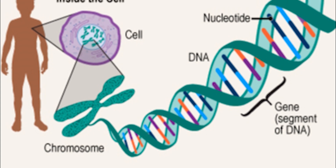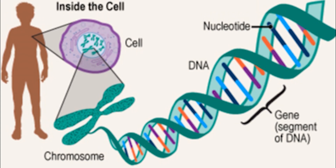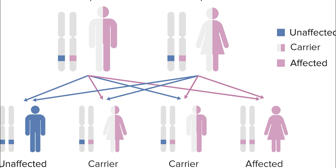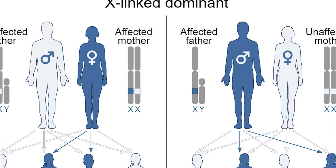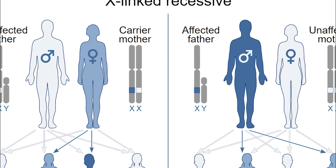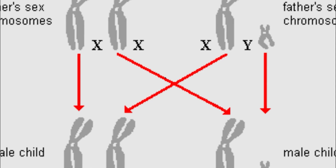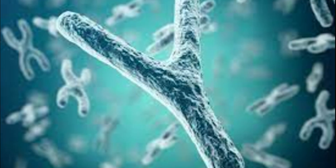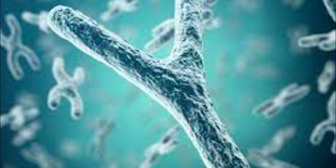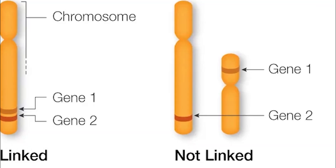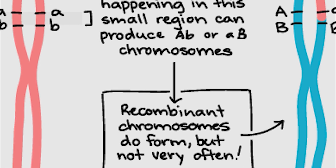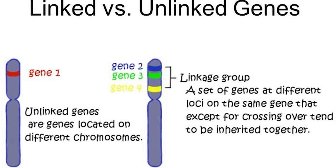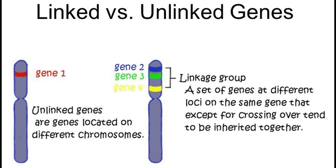This means that an individual must inherit two copies of the mutant gene, one from each parent, in order to express the trait. In addition to autosomal dominant and recessive inheritance, there are several other modes of inheritance, including X-linked dominant, X-linked recessive, and Y-linked inheritance. X-linked dominant and X-linked recessive inheritance refer to genes located on the X-chromosome, and Y-linked inheritance refers to genes located on the Y-chromosome. Another important concept is genetic linkage, which refers to the close proximity of two or more genes on a chromosome, meaning they are likely to be inherited together rather than being separated during meiosis.